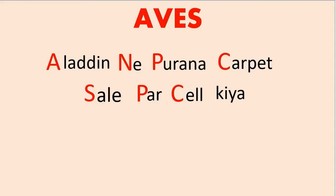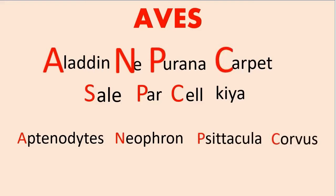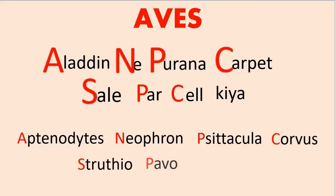Remember, 'sell' starts with C, not S. Aladdin's A is for Aptenodytes. Nae's N is for Neophron. Purana's P is for Psittacula, which has P silent. Carpet's C is for Corvus. Sell's S is for Struthio. Pur's P is for Pavo. And sell kiya's C is for Columba. Done. Nice.